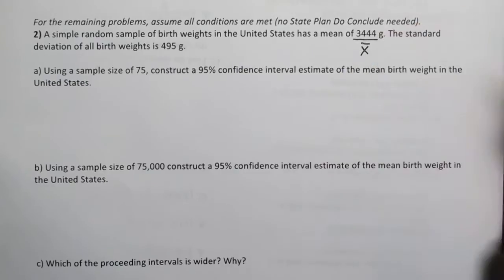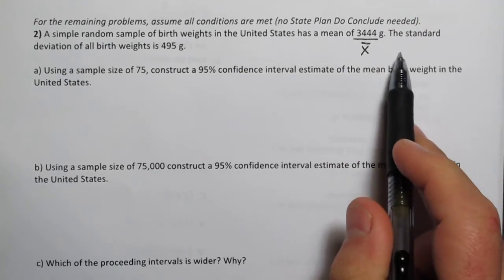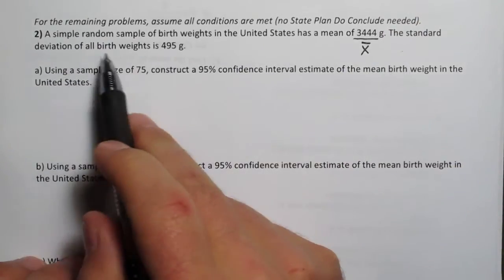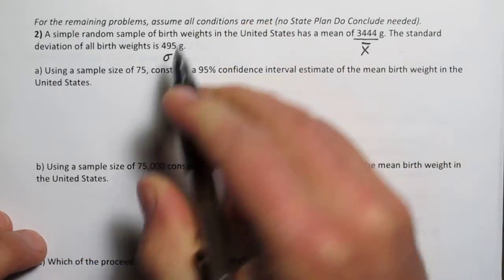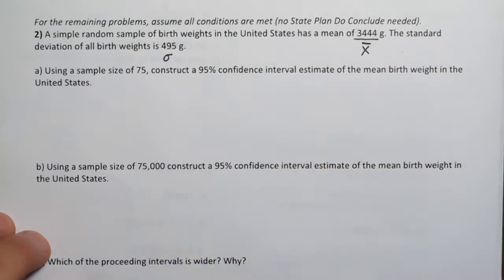So that's X̄ right there, it's the sample mean. But it also says the standard deviation of all birth weights is 495. This is sigma because it's referring to the standard deviation of the population.